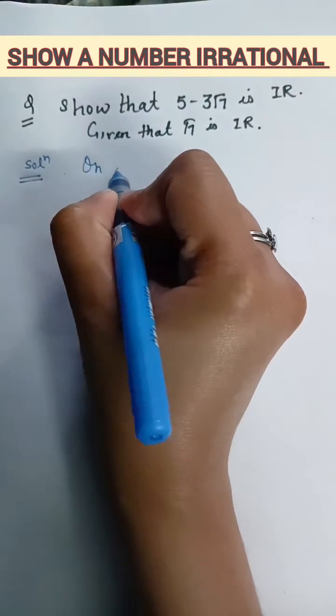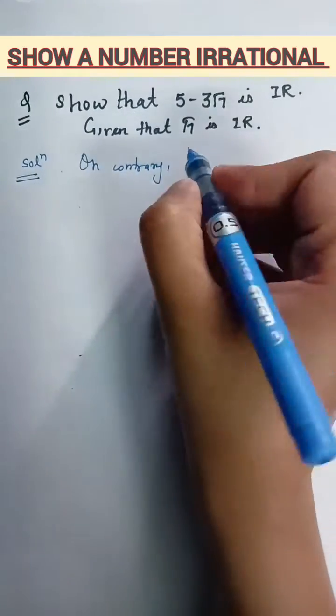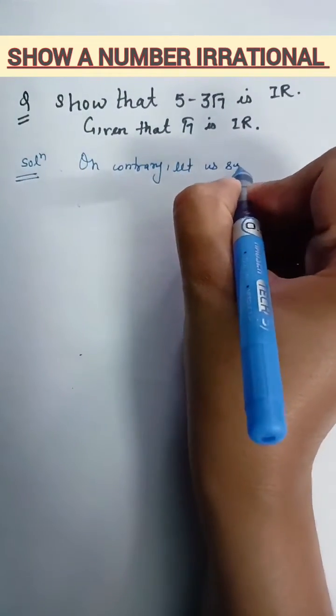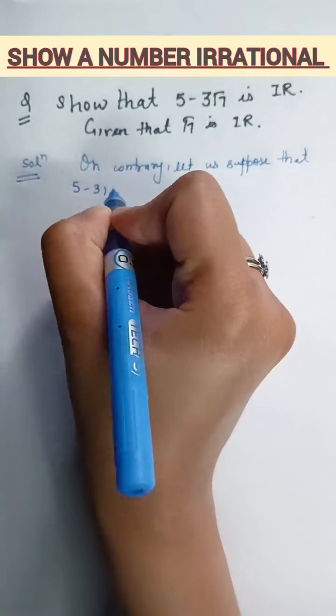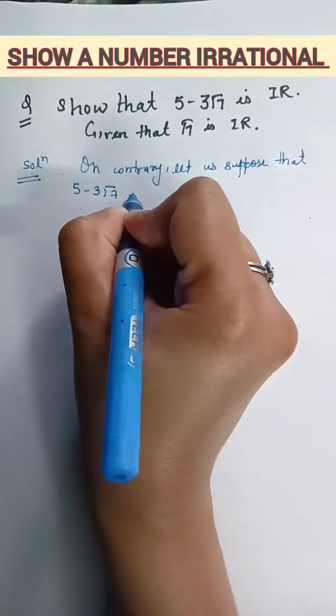So first of all, on contrary, we will suppose that, let us suppose that 5 minus 3 root 7 is rational.